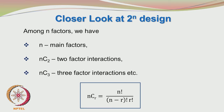In a 2^n design, you have n main factors and the number of 2-factor interactions can be calculated as nC2, third-order interactions as nC3, and so on, where nCr = n! / ((n−r)! × r!).